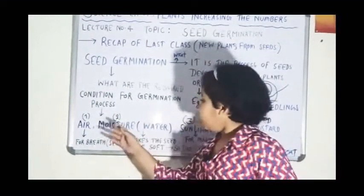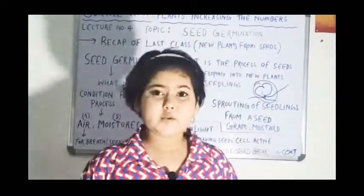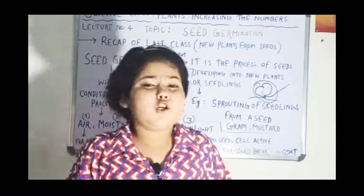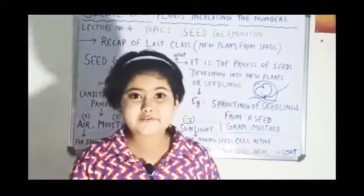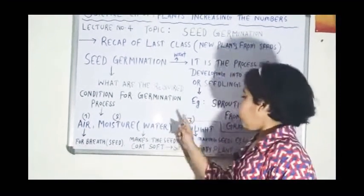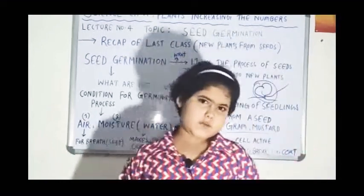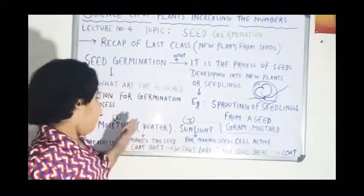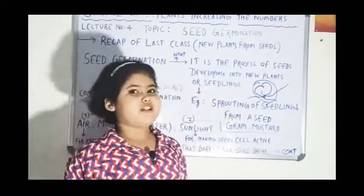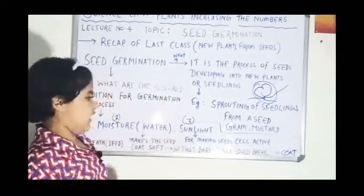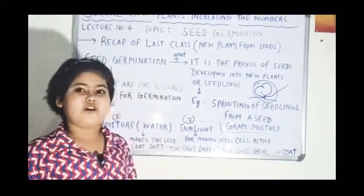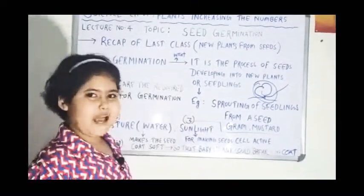The role of air is for breathing — plants are living beings, so they also take breath in order to live. The role of water is that it makes the seed coat soft so that the baby plant can break the coat and come out of the seed. The role of sunlight is for making the seed cells active.